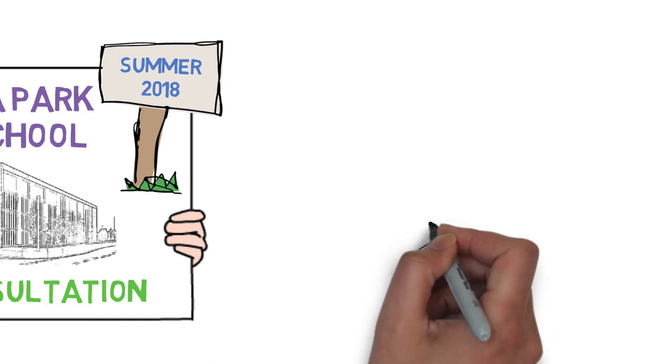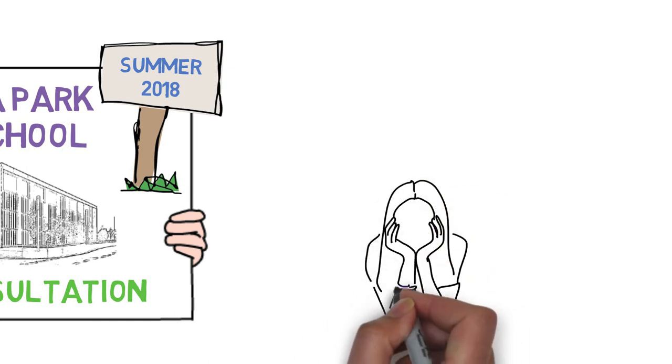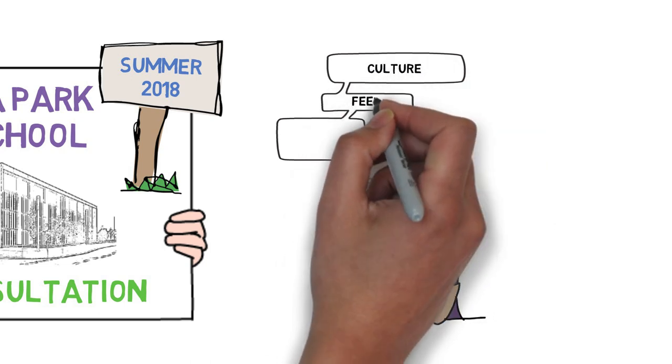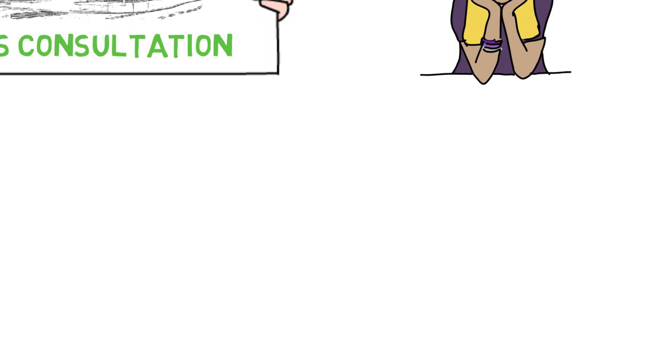We asked parents and pupils to give some thought to what values they wanted to create for their school. In particular, we wanted to know what the culture might be, how the school would feel, and the character of the place and those inside it.